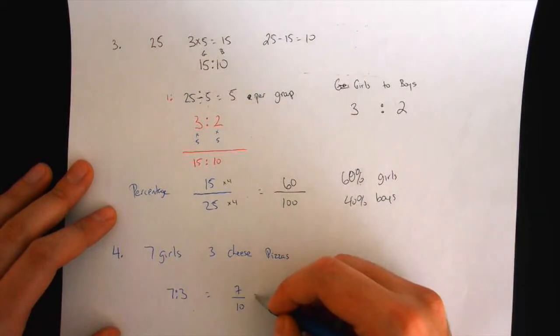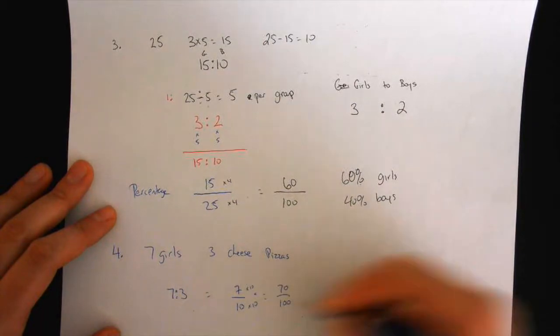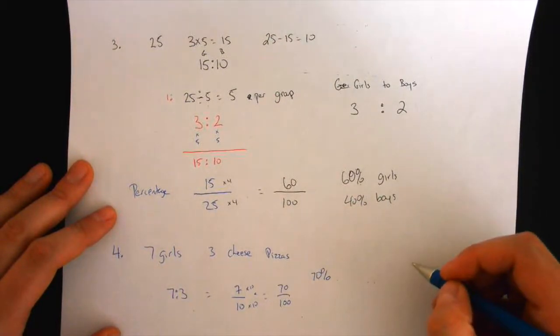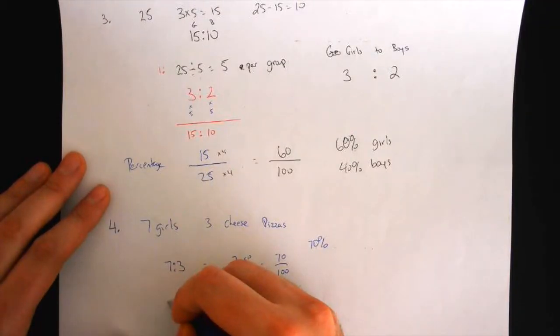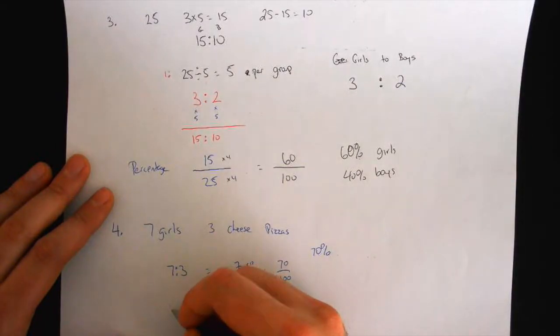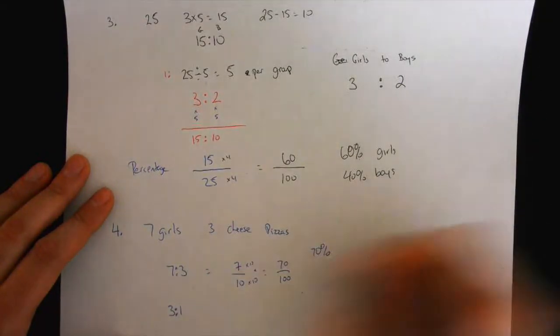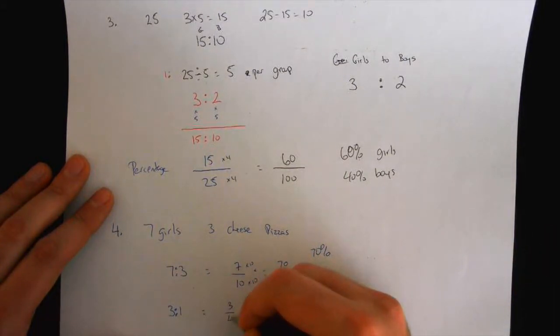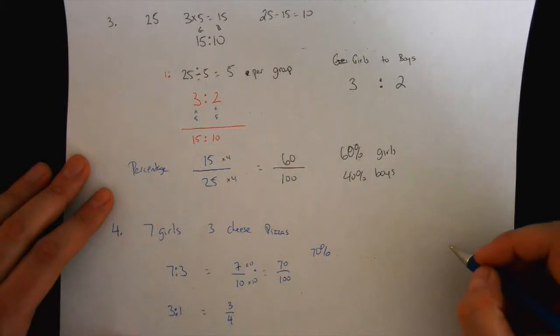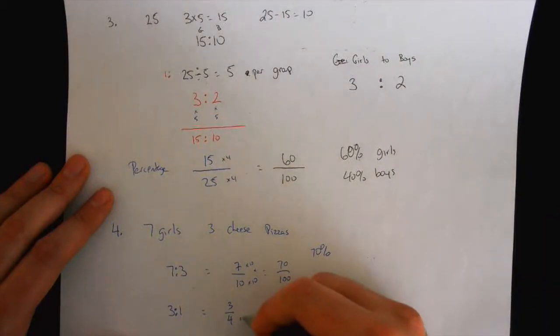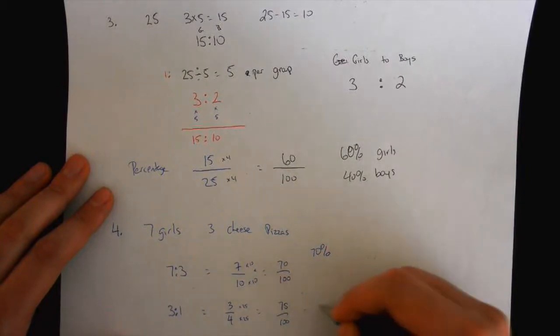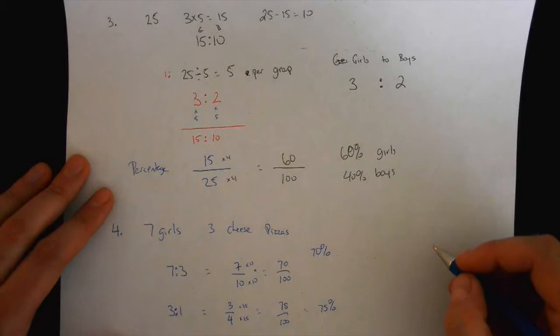And then we did it on a percentage, so we modified both of these by ten. And then we did the same thing for the boys, except this one, so the ratio would be three to one. So then the fraction would be three out of four. And then we did it on a percentage, and we multiplied by 25, and we got 75 over 100, and our percentage was 75%, so the boys got more. The boys got more.